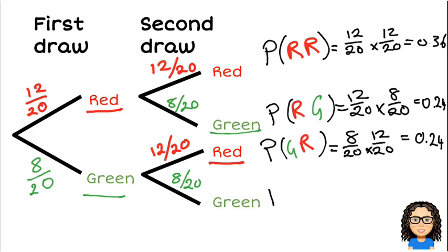Last combination is I could have a green counter and then a green counter. So green, green. The chance of that is 8 out of 20 times 8 out of 20, which will give me a probability of 0.16.